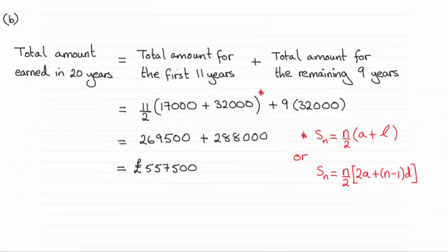Hi there, now for the last part of this question then, we were asked to work out the total amount that Jess earned in 20 years, and you can see it turns out to be £557,500.